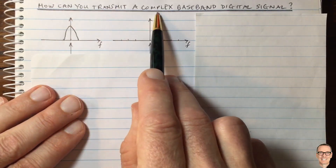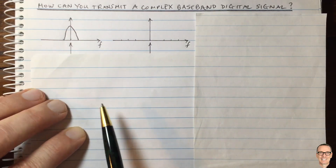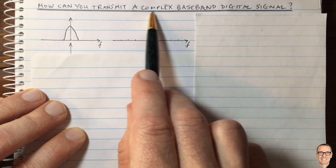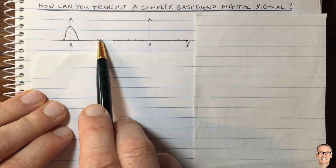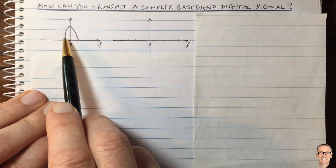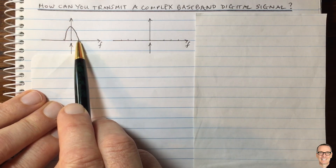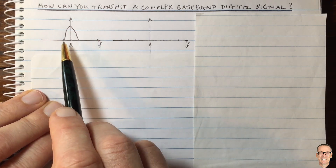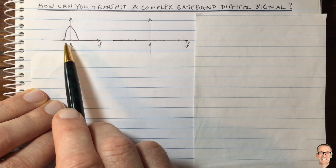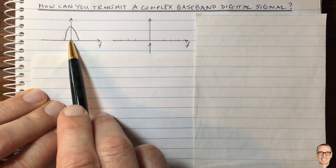How can you transmit a complex baseband digital signal? Let's start by looking at a real signal and then look at the complex. Here is the frequency domain representation of a typical real signal. The Fourier transform is conjugate symmetric — we know that's true for real signals. For more information about conjugate symmetry and other signal basic properties, you can look at the links in the description below this video.